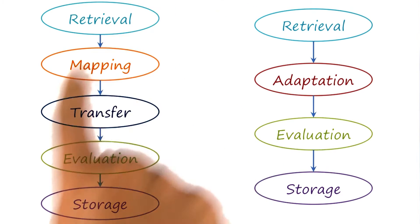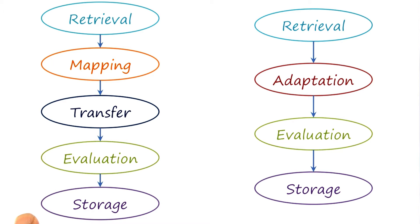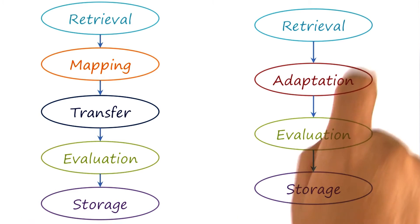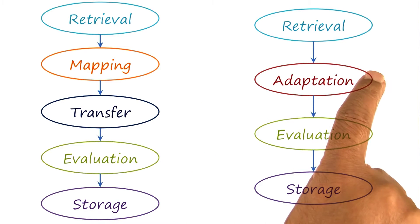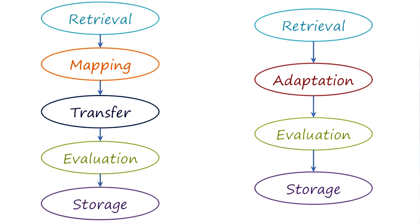Let us compare for a moment the process for analogical reasoning in general with the process for case-based reasoning, within-domain analogical reasoning that we discussed earlier. Notice that retrieval, evaluation, and storage are common between the two processes. In case-based reasoning, the target problem and the source case were from the same domain. They had the same kind of relationships and the same kind of objects.